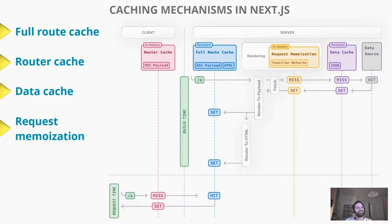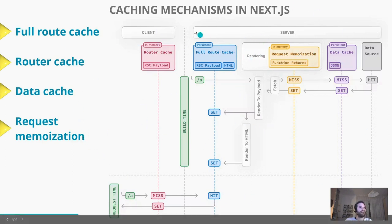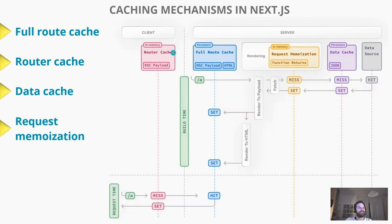We have four different caching mechanisms: the full route cache, the router cache, the data cache, and the request memoization. You can see all of them in this schema. The router cache mechanism happens on the client, and all the other mechanisms happen on the server. The server-side mechanisms are persistent, while the router cache is temporary and depends on the user session.